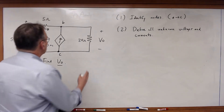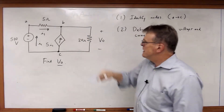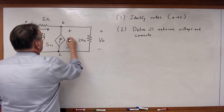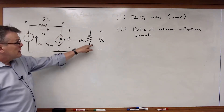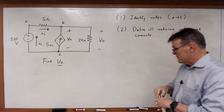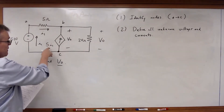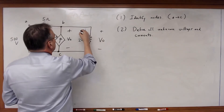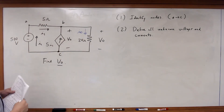Those elements are in series. Are there any elements in parallel? The dependent current source and the 20-ohm resistor are in fact in parallel, which means they have the same voltage across them. So V_O appears across both that dependent source and the 20-ohm resistor. I know the current here is 5I1. For the 20-ohm resistor I need to define a variable — call that I0.